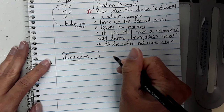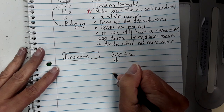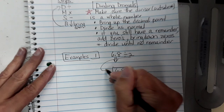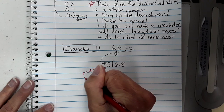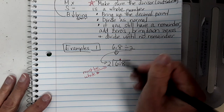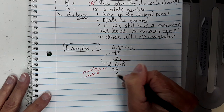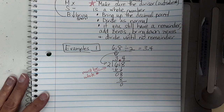Example one: six and eight tenths divided by two. We're going to start off easy. The first number — the dividend — goes under the house. The second number is the divisor and goes on the outside. The divisor is a whole number, so we're good to go. Bring up the decimal point. Two goes into six three times. Three times two is six, subtract zero, bring down the eight. Two goes into eight exactly four times, zero remainder. So our answer is three and four tenths.